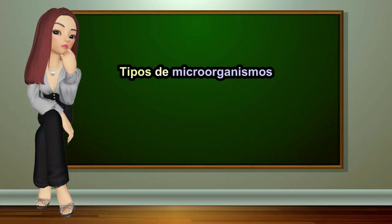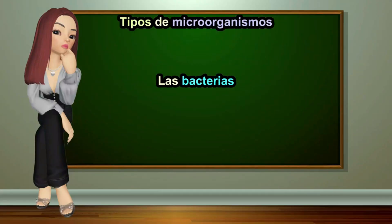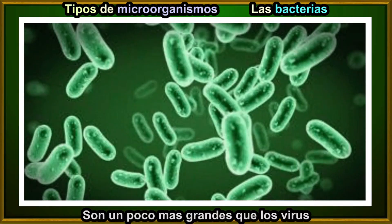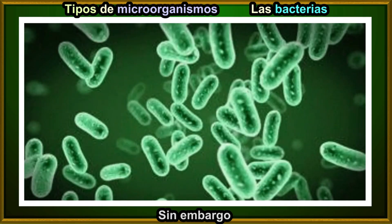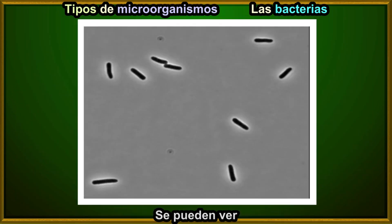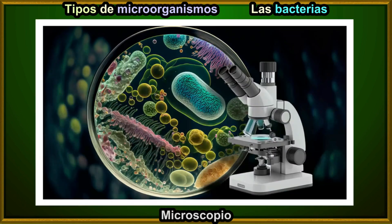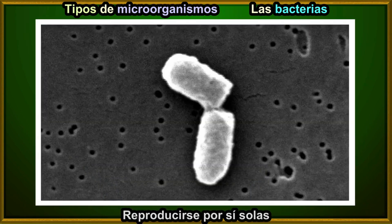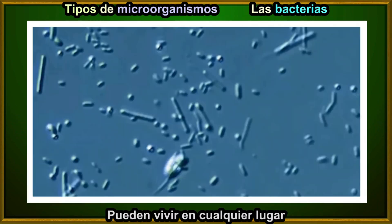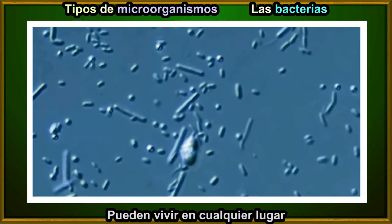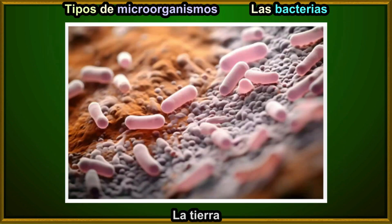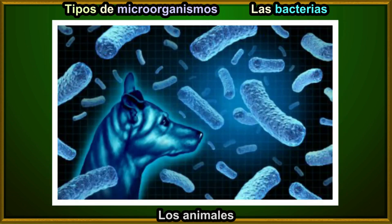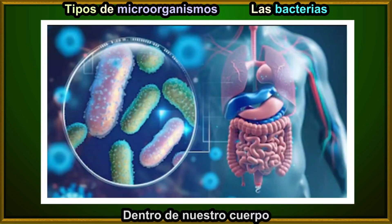Another type of microorganism is bacteria. Bacteria are microorganisms that are a bit larger than viruses. However, they are still so small that we can only see them with the help of a microscope. Unlike viruses, bacteria can live and reproduce independently on their own. They can live in almost any environment such as in water, soil, animals, and even inside our bodies.